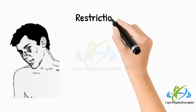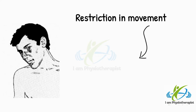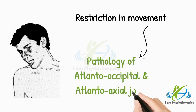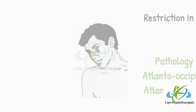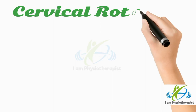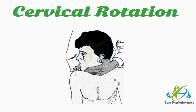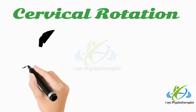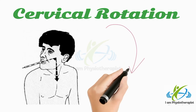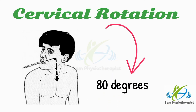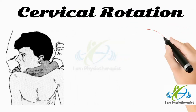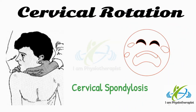Any restriction in movement of side bending or flexion is indicative of pathology in the atlanto-occipital or atlantoaxial joint. To check rotation, ask the patient to look over the shoulder. Rotation can also be measured by using a spatula as a pointer. Normal range is about 80 degrees. Rotation is usually restricted and painful in cervical spondylosis.